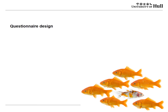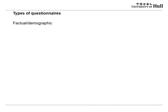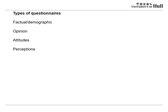Questionnaire design involves looking at types, psychometrics, and sampling. Types of questionnaire include factual and demographic questionnaires — asking about gender, income, where people live — opinion, attitude, or perception questionnaires, and questionnaires used to make a diagnosis. You must be clear what you want to find out and how you're going to analyse the data right from the beginning. Use closed rather than open questions where possible — open questions in questionnaires are very difficult to analyse.